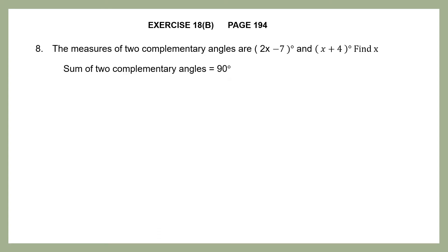We all know that the sum of two complementary angles is 90 degrees. The first angle given here is 2x−7 degrees and the second angle is x−4 degrees. That means if I add up those two, I should get 90 degrees. So 2x−7 degrees added to x+4 degrees together must equal 90 degrees, because the question says these are two complementary angles.